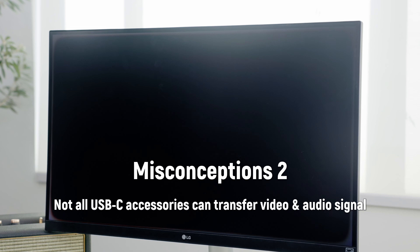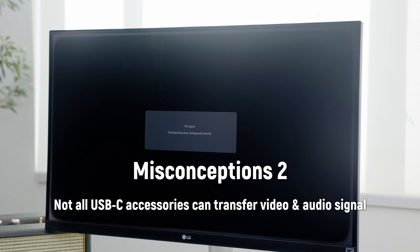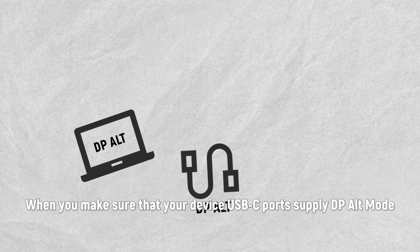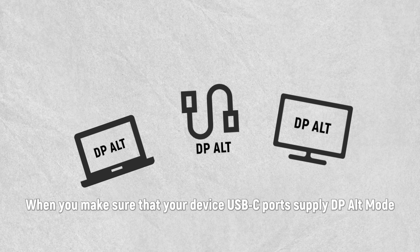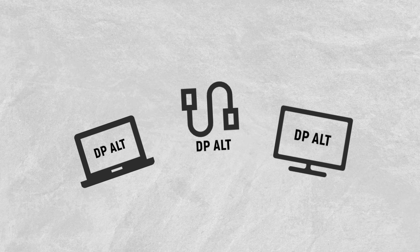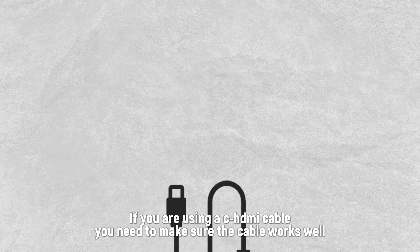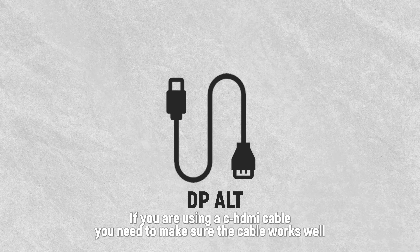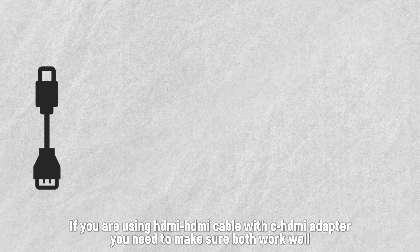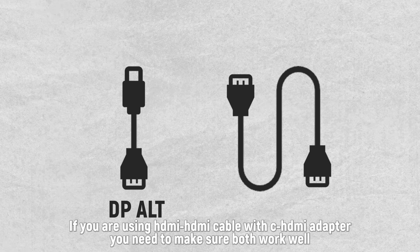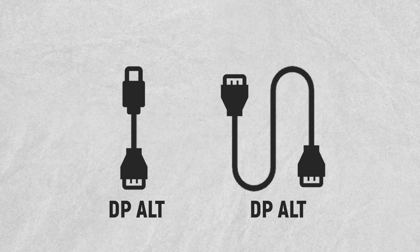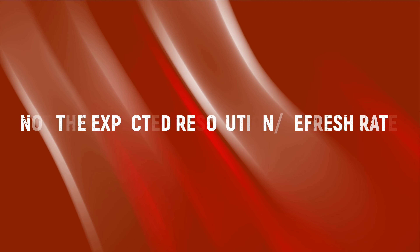Not all USB-C accessories can transfer video and audio signal. When you confirm your device's USB-C port supplies DP-OUT mode, also make sure the connected accessories work well. If using a C-to-HDMI cable, verify the cable works. If using an HDMI-to-HDMI cable with a C-to-HDMI adapter, make sure both work well.